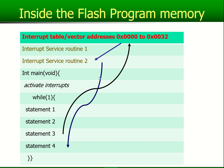You can be directed from the interrupt table or vector addresses and then go and execute your program in the ISR. Once you've finished there, you will jump back — remember, we jumped out of statement number three — and you will continue into statement number four, the one following number three. This is what's extremely nice about an interrupt. If you get interrupted somewhere in your program, you jump out, go to the interrupt vector address, which directs you to the interrupt service routine, and once you've finished you continue right after the statement you left from.